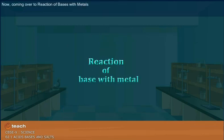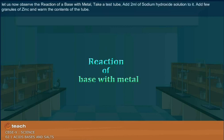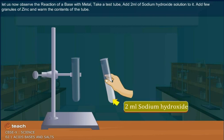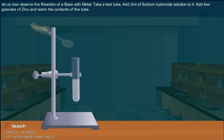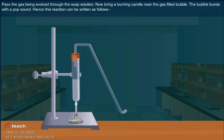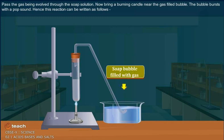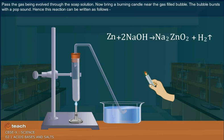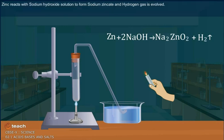Let us now observe the reaction of base with metals. Add 2 ml of sodium hydroxide solution to a test tube, add a few granules of zinc, and warm the contents. Pass the gas evolved through soap solution and take a burning candle near a gas-filled bubble — the bubble bursts with a pop sound. This reaction can be written as: zinc reacts with sodium hydroxide solution to form sodium zincate and hydrogen gas is evolved.